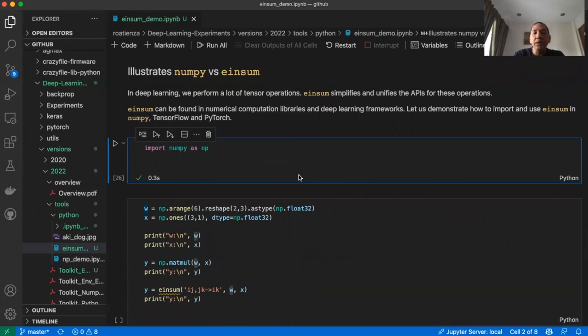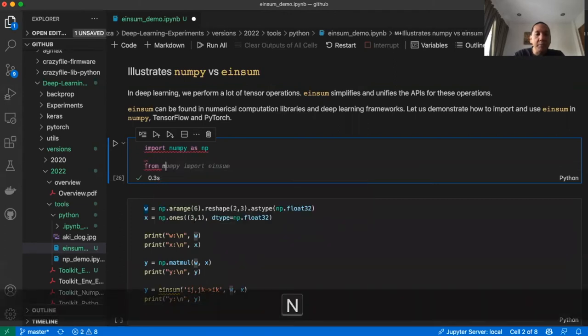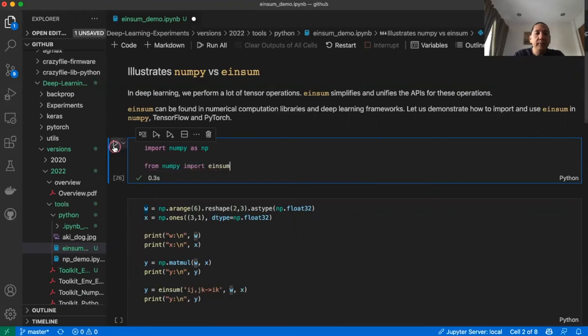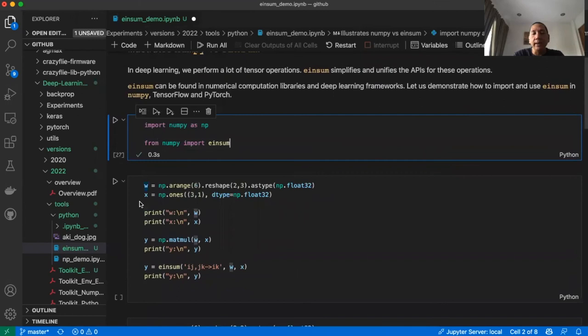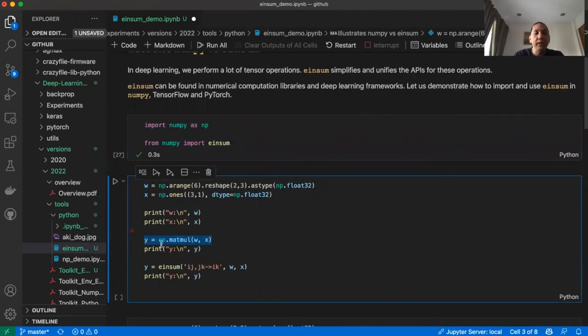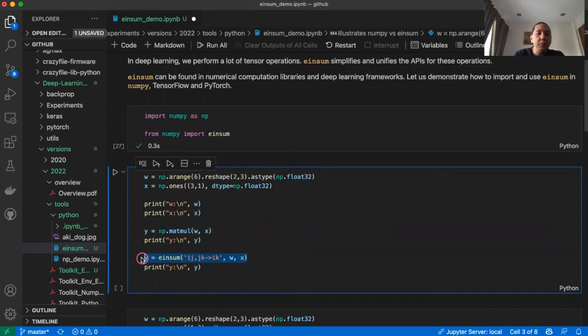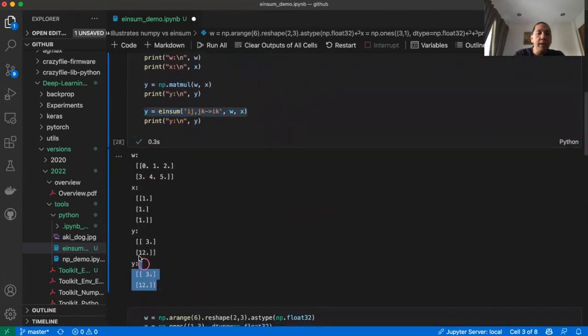EinSum can be found in numerical computation libraries and deep learning frameworks. Let us demonstrate how to use and import EinSum in NumPy, TensorFlow, and PyTorch. For NumPy, we type from NumPy import EinSum. Then we execute the code as found in the slides. In this case, we will multiply two tensors W and X. W being 2 by 3 in shape while X is 3 by 1 in shape. Then we use NumPy to multiply the two tensors, and we also use EinSum to multiply the two tensors. We notice that we have the same results.